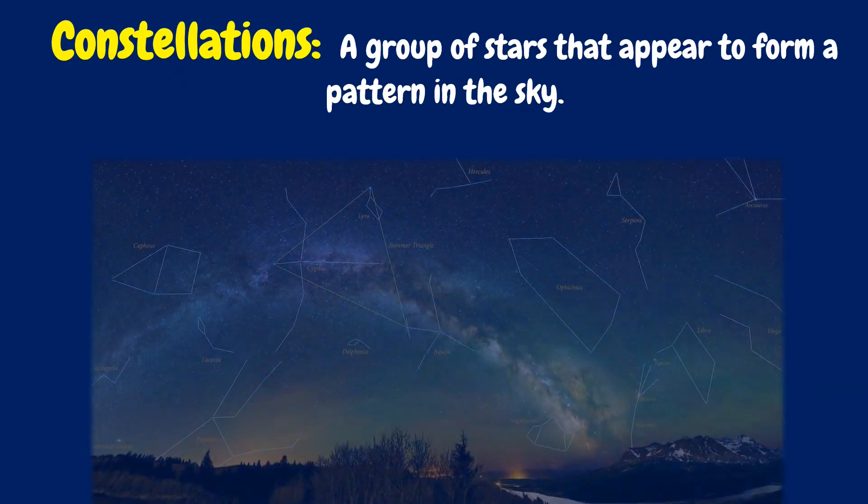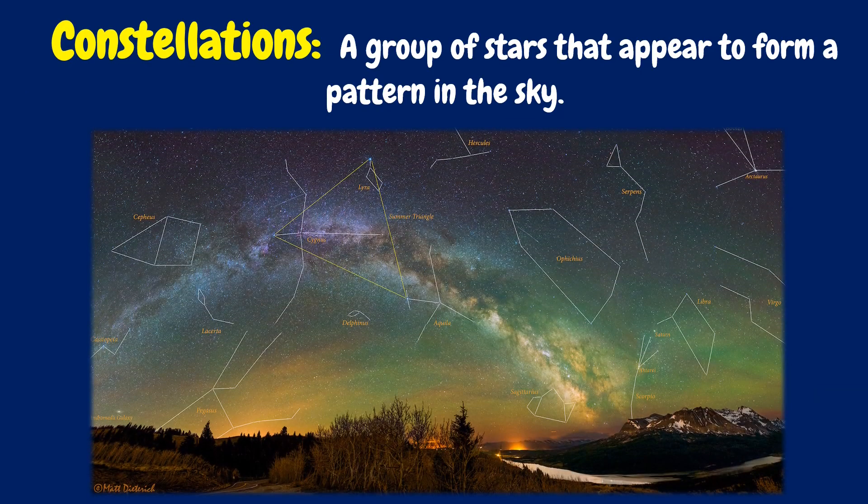A constellation is an area on the celestial sphere in which a group of visible stars forms a perceived outline or pattern, typically representing an animal, mythological person or creature, or an inanimate object.